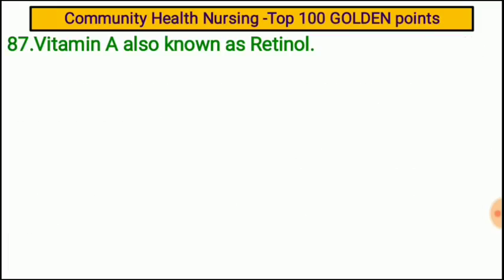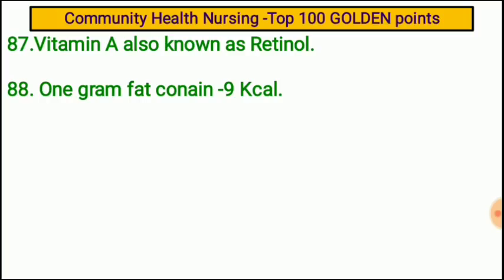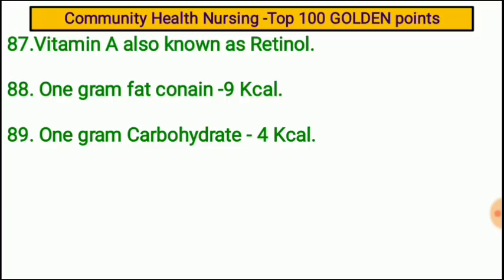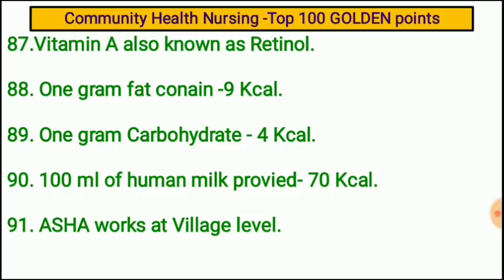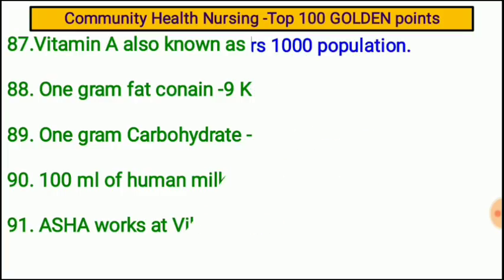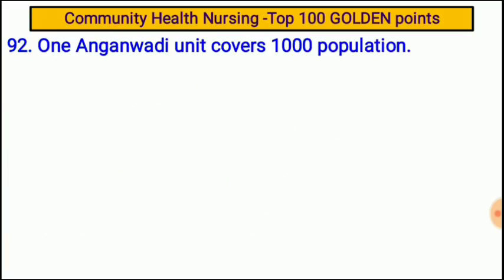Lung cancer is the most common cancer in the world. Breast cancer in females is the most common cancer in India. Vitamin A is also known as retinol. 1 gram fat contains 9 kilocalories; 1 gram carbohydrate contains 4 kilocalories; 1 gram protein contains 4 kilocalories. 100 ml of human milk provides 70 kilocalories. ASHA works at the village level. One Anganwadi unit covers 1000 population.